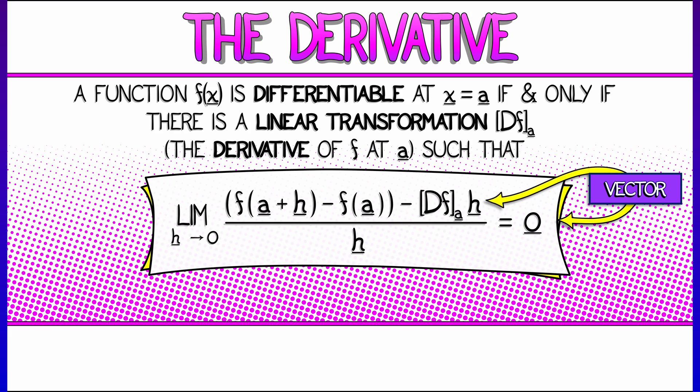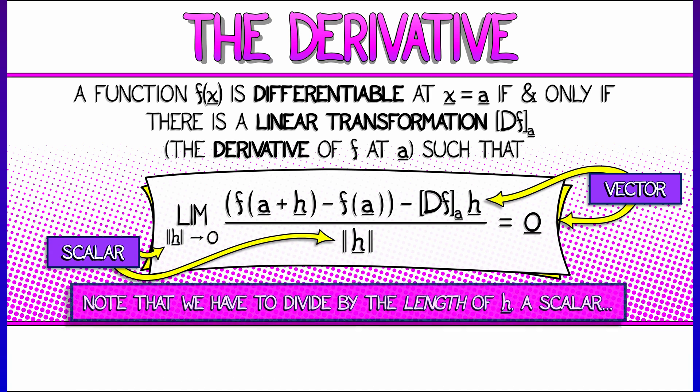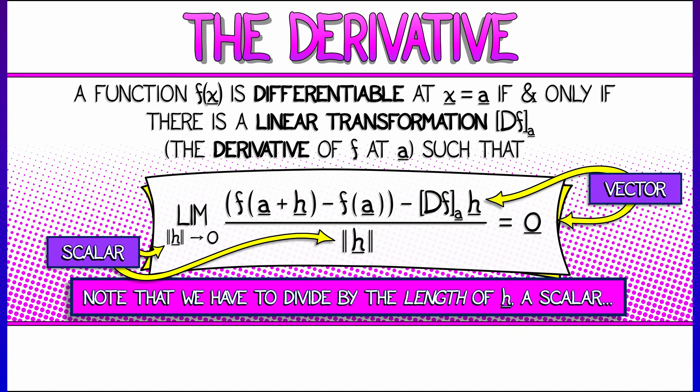Notice that all of these quantities in the numerator are vector quantities, and we're doing vector addition and subtraction. On the right-hand side we have the zero vector, and we're dividing by a vector h. That's not going to work. We need to scalarize that and divide by a scalar. In this case, the length of h is the right thing to do, and we need to take the limit over all h such that that length is going to zero.